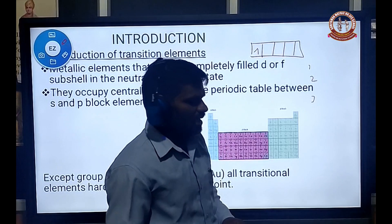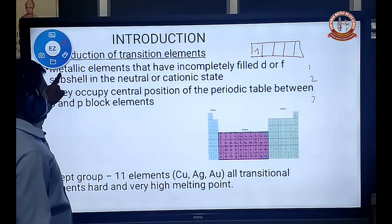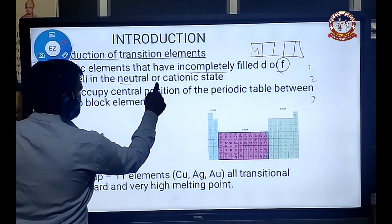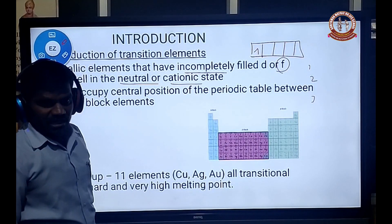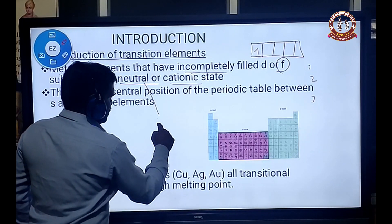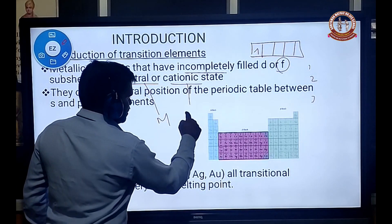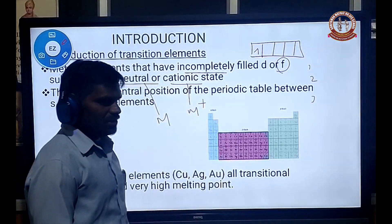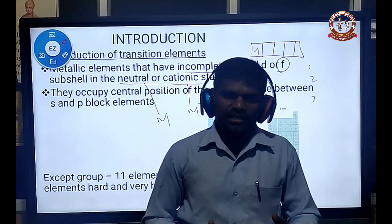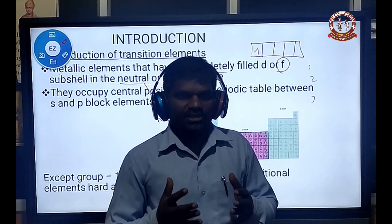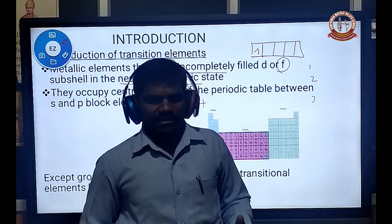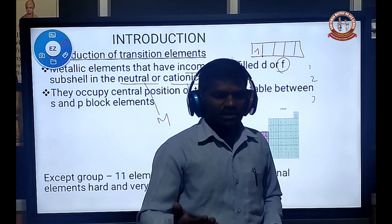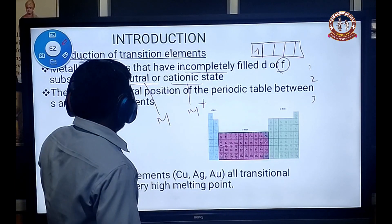Transition elements are also known as D-block elements. Metallic elements that have incompletely filled D orbitals are called transition elements. Neutral means the elemental state; cationic means the normal oxidation state. This definition includes lanthanoids and actinides also. Hume-Rothery defines transition elements as a metal that has an unfilled D orbital or which gives rise to an incompletely filled D subshell.